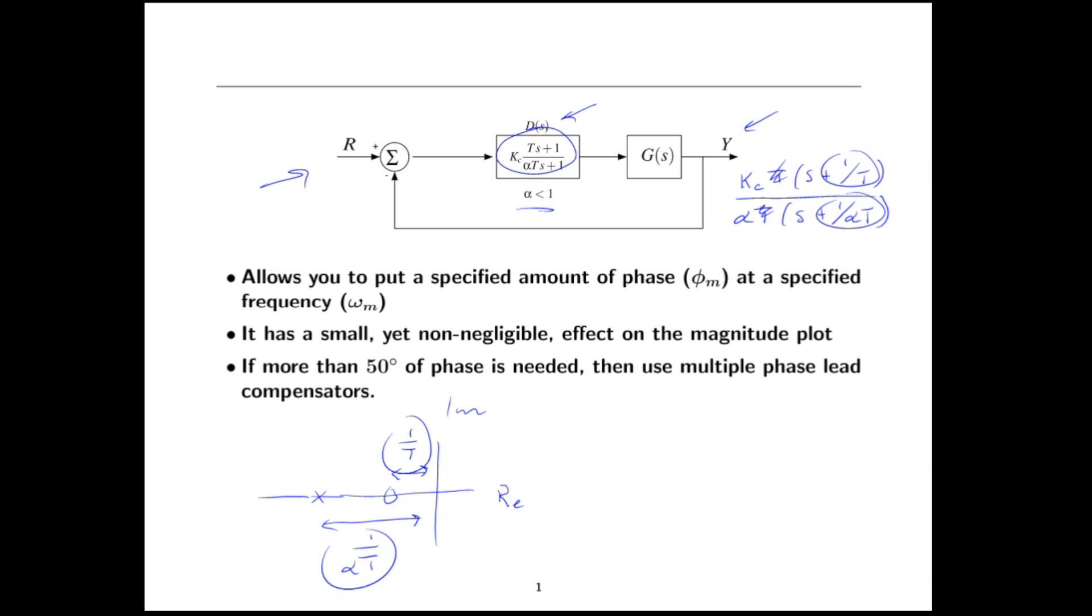Now what does a phase lead compensator do for you? Well it allows you to put a desired amount of phase, we'll call it phi m, at a specified frequency omega m. From one compensator you can get up to maybe 50 degrees of phase. If you need more than that then you ought to use additional phase lead compensators.